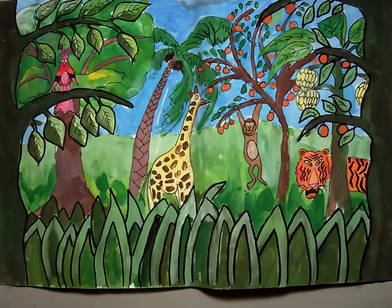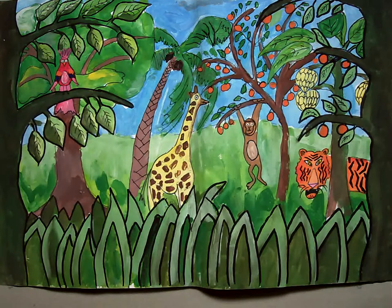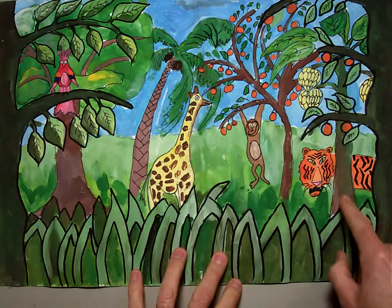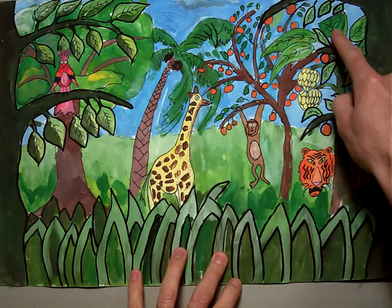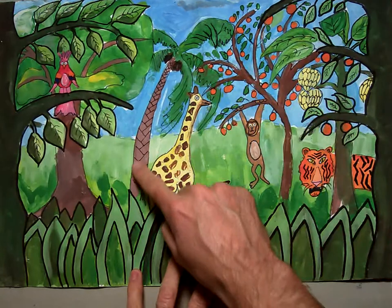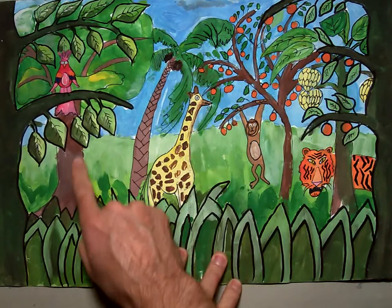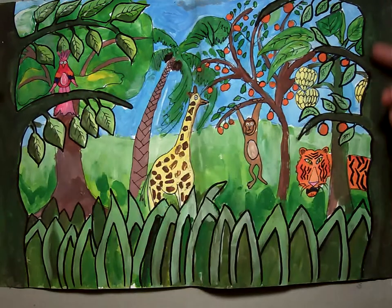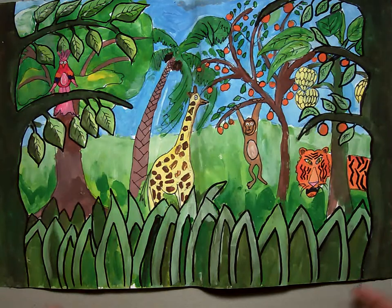Our final painting is going to look something like this when we're done with it. And what we're going to do today is we're going to learn how to draw a bunch of different kinds of trees. You can see that we've got a banana tree back here in the background. We've got an orange tree, a palm tree,